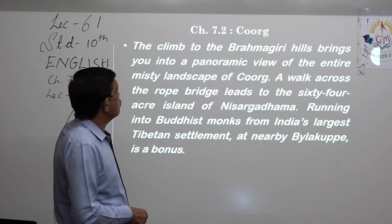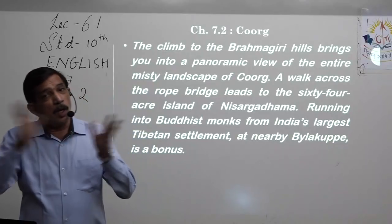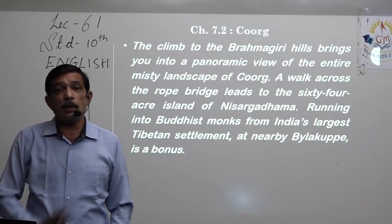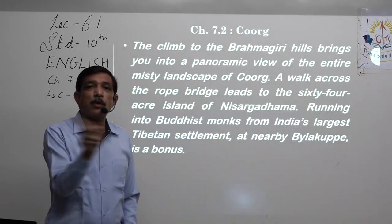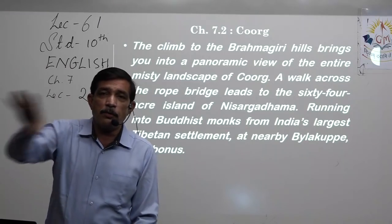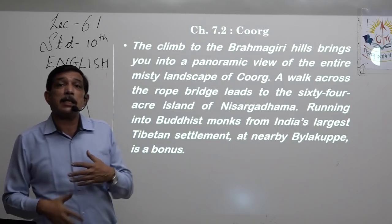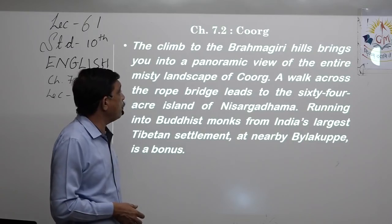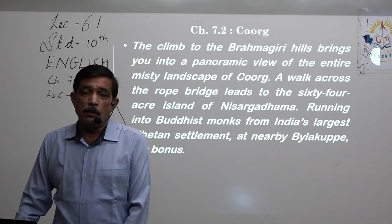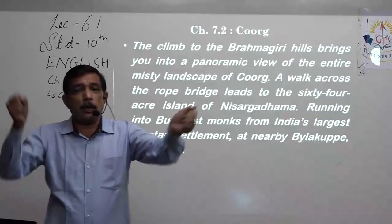The climb to the Brahmagiri hills brings you into a panoramic view of the entire misty landscape of Coorg. Going up and down you get a different scenario - when you go up a different landscape opens, and when you come down the whole landscape fills in front of you. A panoramic view requires spanning your eyes and turning your head to take in the entire expanse. A walk across a rope bridge leads to the 64-acre island of Nisargadama.